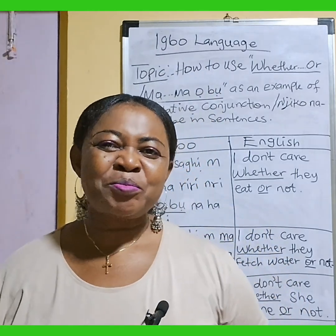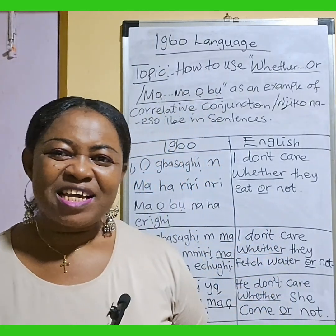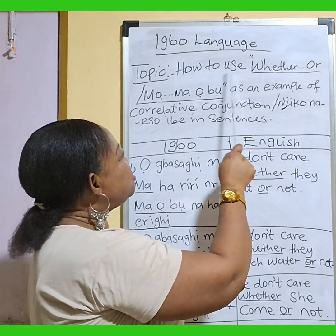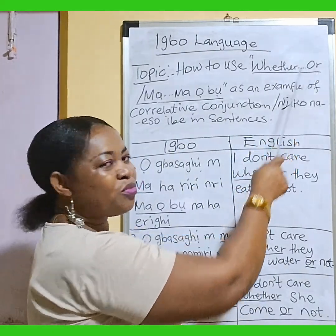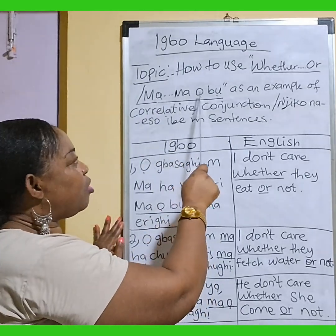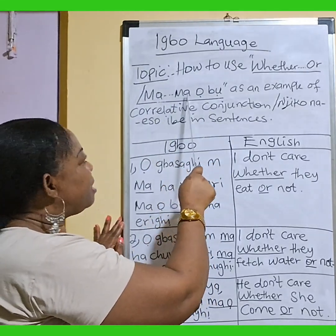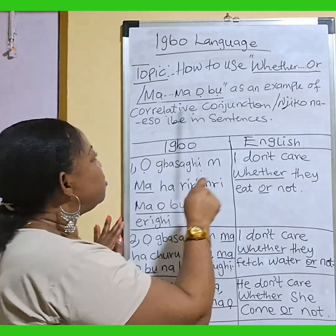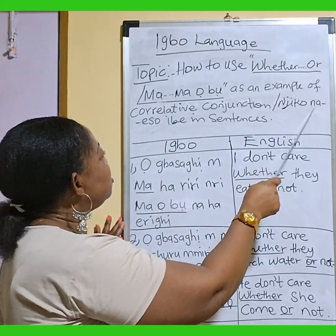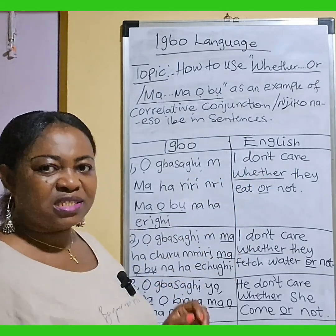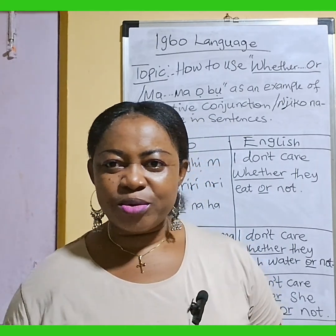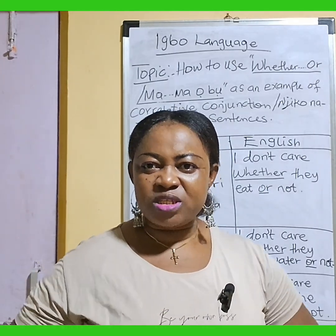Okay, let's start. We have Ibo language. Our topic this morning says how to use 'whether or.' In Ibo, 'whether or' means 'ma, ma or' — as an example of correlative conjunction. In sentences, we are going to use 'whether or' — 'ma, ma or' — in our conjunction this morning.